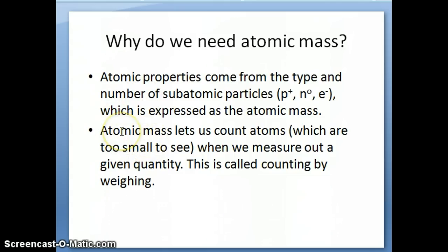The second important thing we can do once we know the atomic mass is count the number of atoms we have in a given sample. Remember that atoms are too small to see, so when we weigh a certain amount of material, for example 10 grams of iron, we're really interested in knowing how many iron atoms we have, but we can't count them because they're too small. So we have to use the atomic mass information to determine the number of iron atoms we have in 10 grams of iron. This method of determining the number of atoms by weighing is what we call counting by weighing.